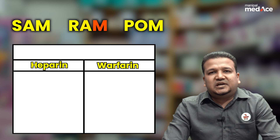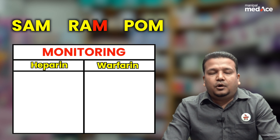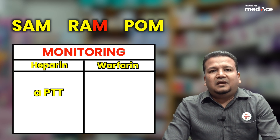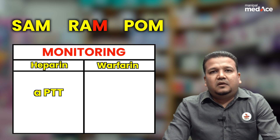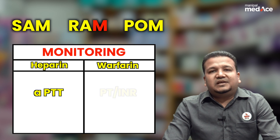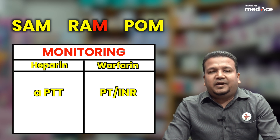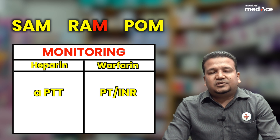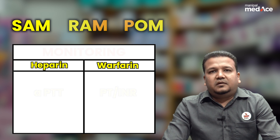M stands for monitoring. Both require monitoring. Heparin — particularly unfractionated heparin — action is monitored by the test APTT, whereas warfarin action is monitored by the INR, or the international normalized ratio.